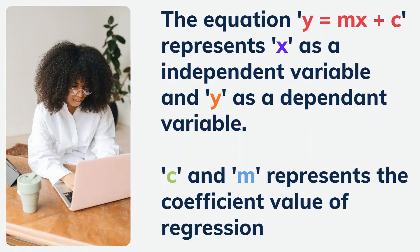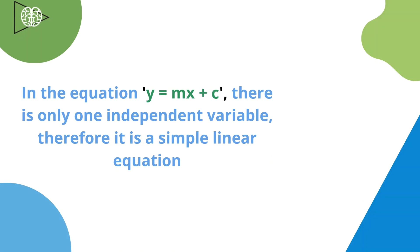The equation y equals mx plus c represents x as an independent variable and y as a dependent variable, whereas c and m represent the regression coefficients. We will discuss these regression coefficients in detail. In the equation y equals mx plus c, there is only one independent variable, therefore it is a simple linear equation.